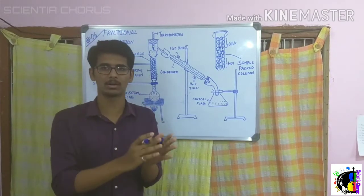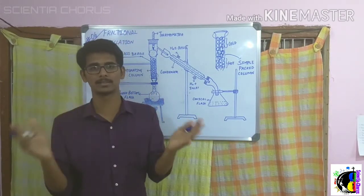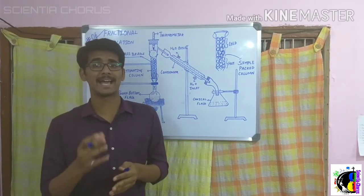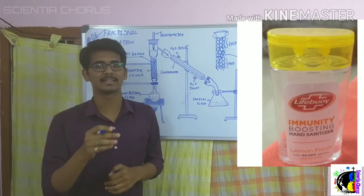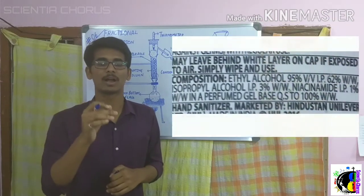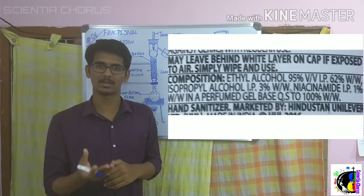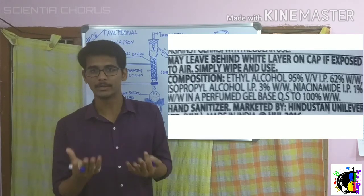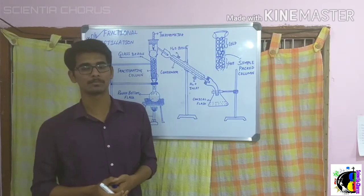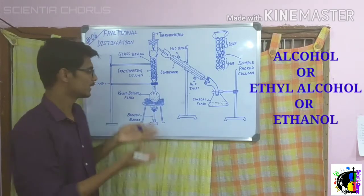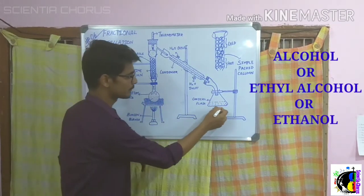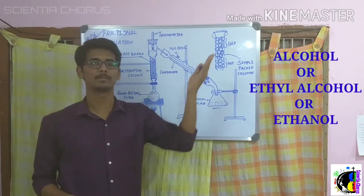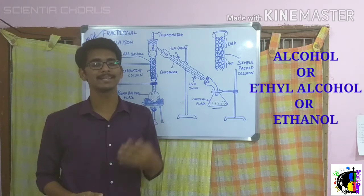The second application is the preparation of ethyl alcohol, also known as ethanol. Nowadays we use sanitizers, and sanitizers consist of alcohol — which is ethyl alcohol. To prepare this ethyl alcohol, we use the distillation process to obtain ethanol, which is then used in the preparation of many sanitizers.